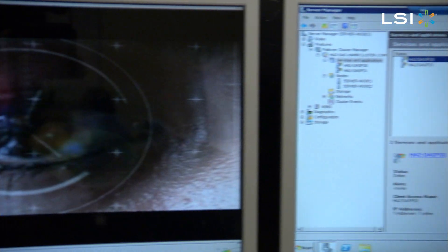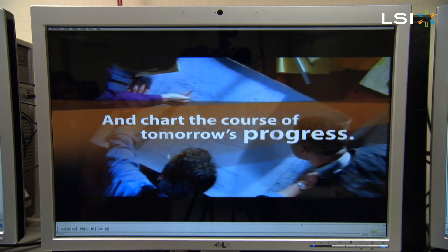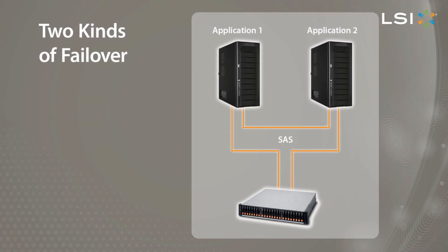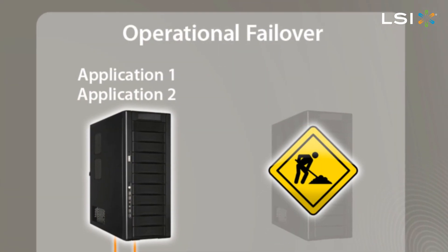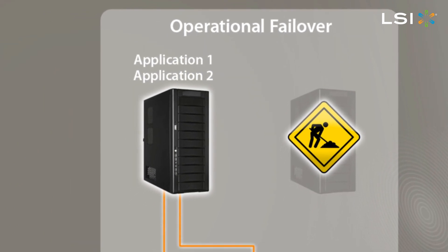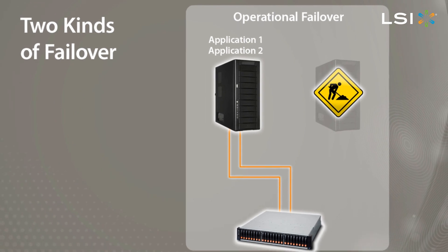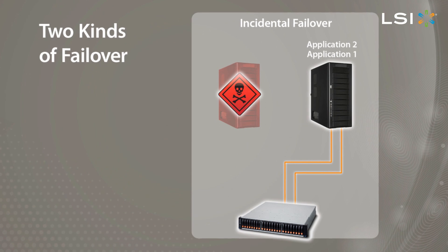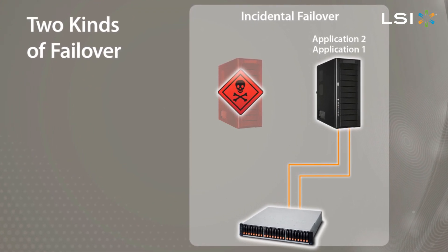With the Microsoft Windows clustering software running, Server 1 and Server 2 are each supplying the client with a separate application — in this case, a video — each one sourcing different drives in the JBOD. There are two different cases where applications will need to failover. Operational failover can be enacted manually for purposes of performing maintenance on one of the servers or to balance the application load across the CPUs. Incidental failover happens automatically when one of the servers running an application stops functioning.